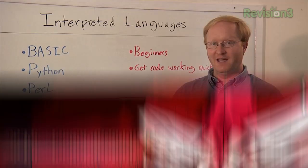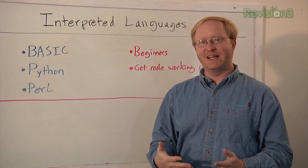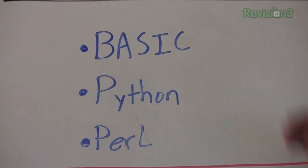The first type of language we're going to talk about is an interpreted language. An interpreted language is compiled basically as it runs. Popular examples include BASIC, beginner's all-purpose symbolic instruction code. We use that language on the Pocket BASIC computer episode.